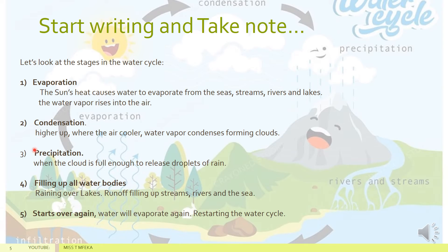The next step is when the clouds get really heavy and full — it's time to let go of the rain. This starts during the third stage, which is precipitation. The clouds release droplets of water, and that rain goes down the mountain into the rivers and streams. The rivers and streams always wind up back to the ocean, filling up all water bodies. We call that collection. Raining over lakes and runoff fills up streams, rivers, and the sea, and then it repeats all over again, starting the water cycle.